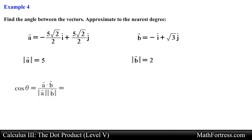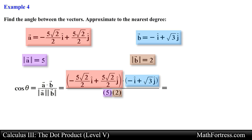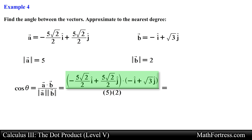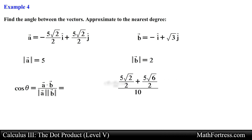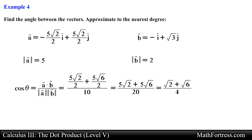Next we use the rearranged geometric definition of the dot product and substitute values for the right side of the expression. The dot product between vector A and vector B simplifies to the following value, and the product of the magnitudes of vector A and vector B reduces to 10. Manipulating and simplifying the expression we obtain the following. Finally we solve for theta by taking inverse cosine, giving us exactly 15 degrees for the final answer. In our next video we will go over slightly more challenging examples.